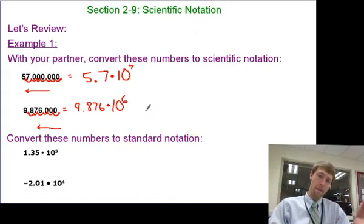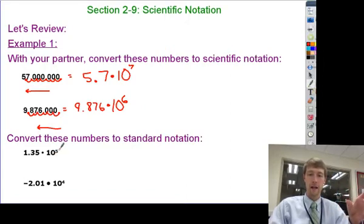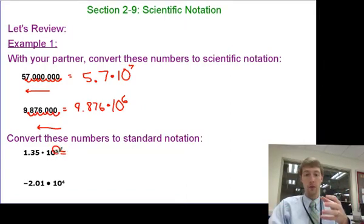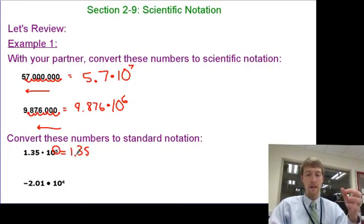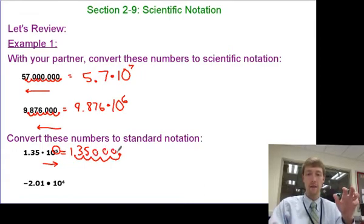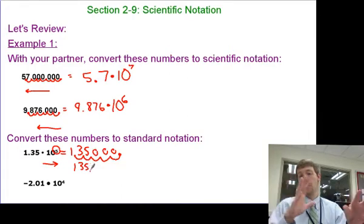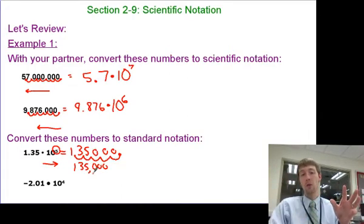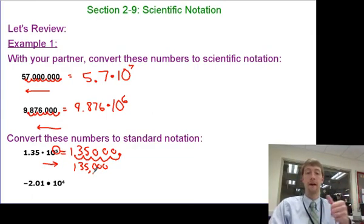Going the other way: if I have 1.35 times 10 to the fifth and I want to expand that into standard notation, I move the decimal five spaces to the right. Ten to the fifth is a really big number, so we're going to end up with a really big number — 1.35 times a one with five zeros gives us 135,000.